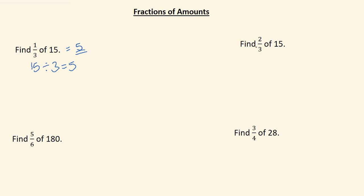If we move on to this question where it says find 2 thirds of 15, well we would start off like we did with the first question by finding 1 third. We've already done that, so we know that 1 third of 15 is equal to 5. Therefore 2 thirds of 15, all we do is multiply 1 third by 2. So we do 5 times 2 which is 10.